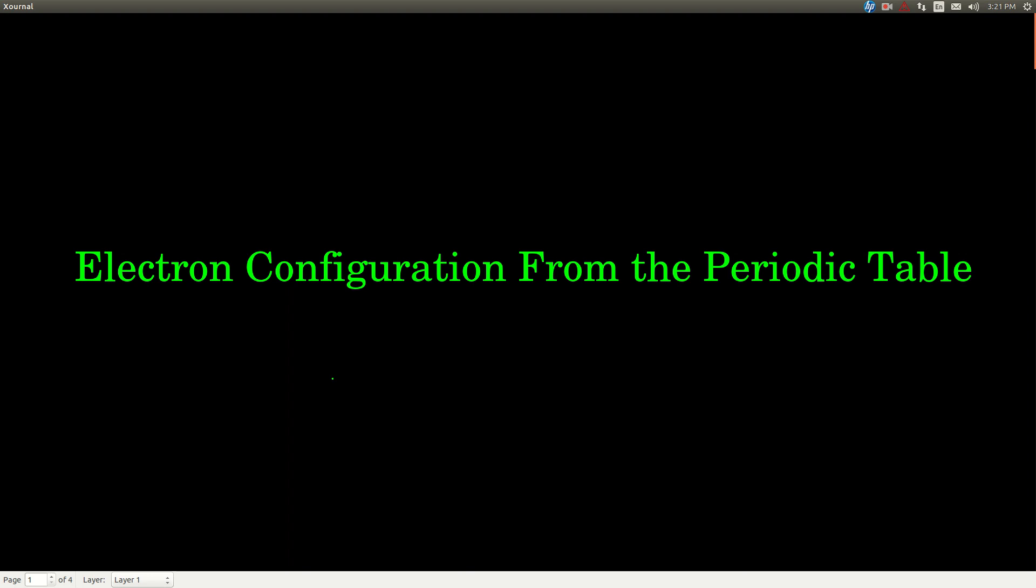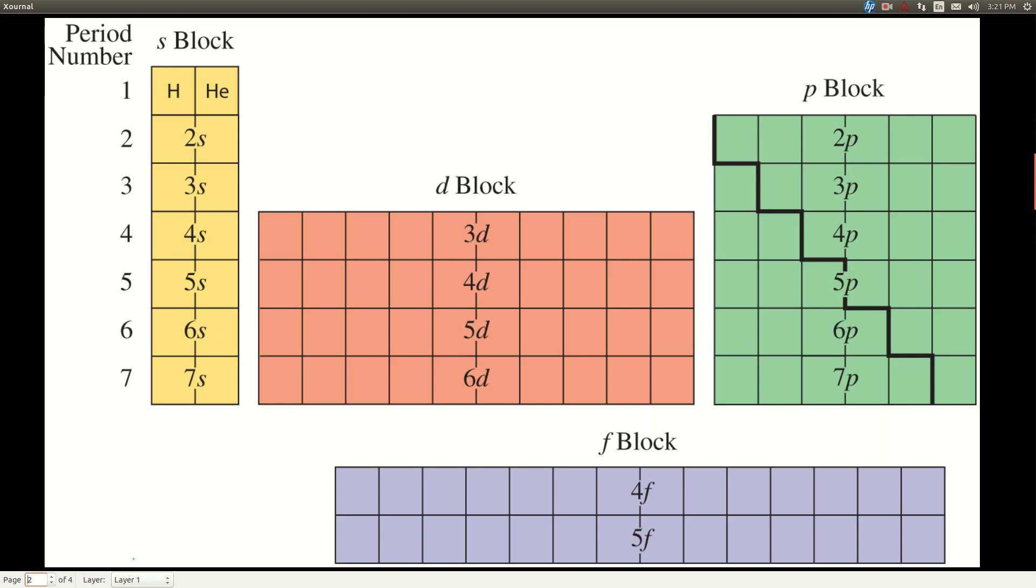In this video, we're going to see how to write electron configurations just by looking at the periodic table. We're going to be able to read electron configurations from the periodic table. So in order to do that, we have to know about blocks.